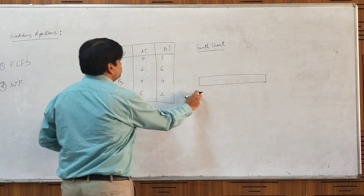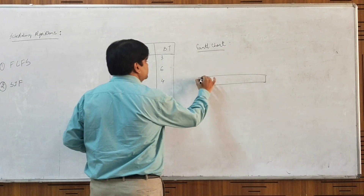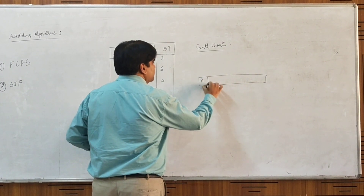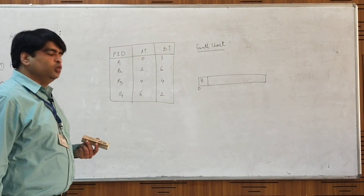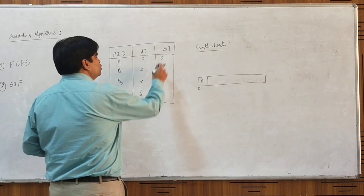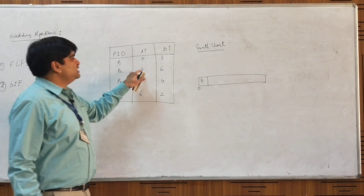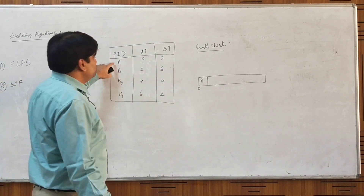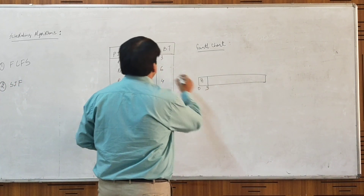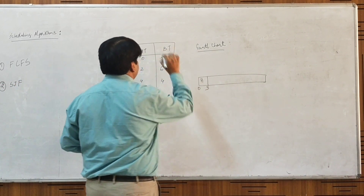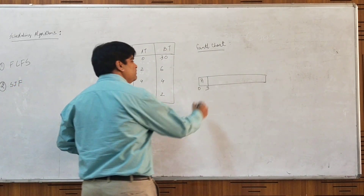At time t=0, only one process has demanded the CPU, so we allocate that process at t=0. The next process arrives at t=2. At t=2, P1 will have a remaining burst time of 1 second and P2 will have a remaining burst time of 6 seconds. Since P1 has less remaining burst time, we continue with P1. From 0 to 3, P1 will execute. At 3 seconds, we have only one process available, P2, so we start P2.